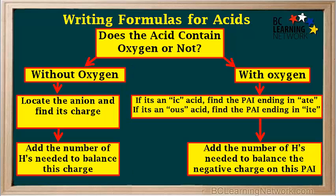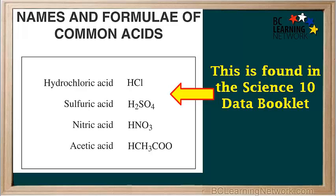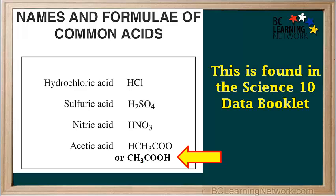Here is a flow chart for writing the formula for an acid given its name — you may want to pause the video and make a screen capture so you can print it out. The Science 10 data booklet includes a small table with the names and formulas for four common acids you'll be dealing with in Science 10, so don't forget to refer to it if you need to. Note that the formula for acetic acid can also be written as CH₃COOH, which is frequently used for acetic acid.